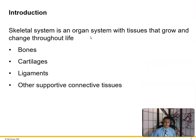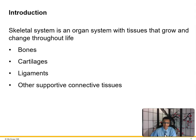The skeletal system is an organ system with tissues that grow and change throughout life. We have bone, cartilage, and ligaments. The best blood supply goes to bone, then muscles, then tendons, then ligaments and cartilage. Ligaments attach bone to bone; cartilage is usually found between the bones such as articular cartilage — the meniscus is another example. Tendons attach muscle to bone. The worst blood supply is cartilage, which is why if you tear your meniscus the chance of recovery is slim to none.